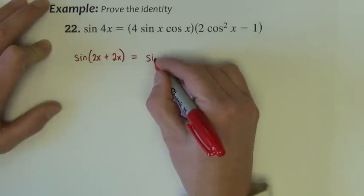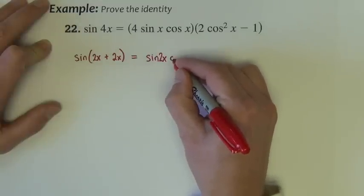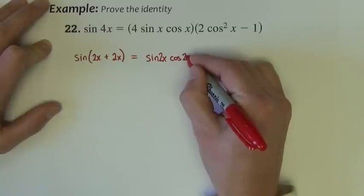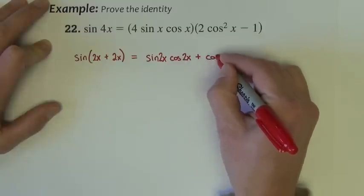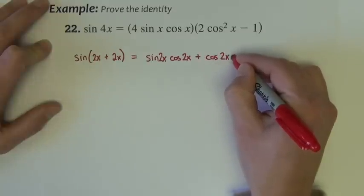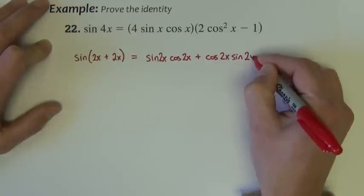I'm going to use my sine sum and difference formula to expand this out, which says you want sine of the first, cosine of the second, plus cosine of the first, sine of the second.